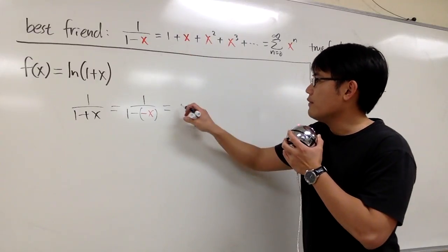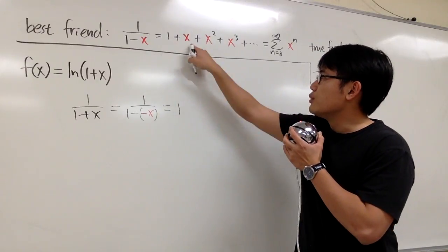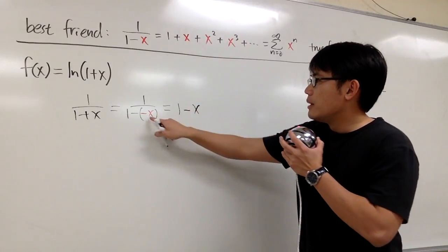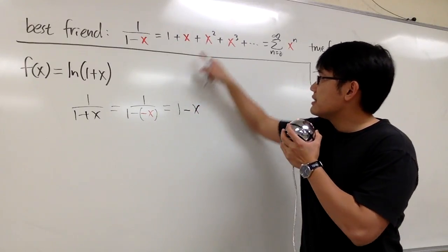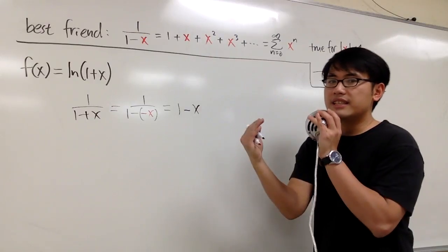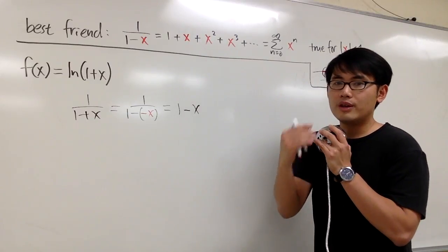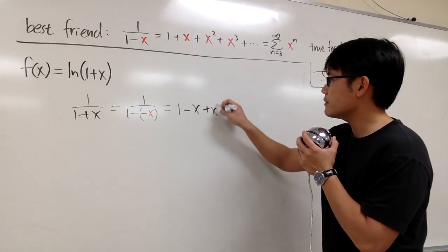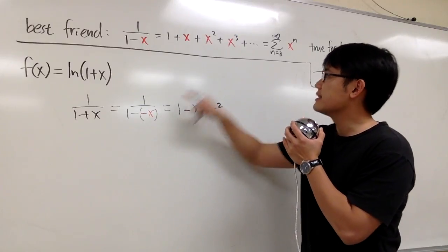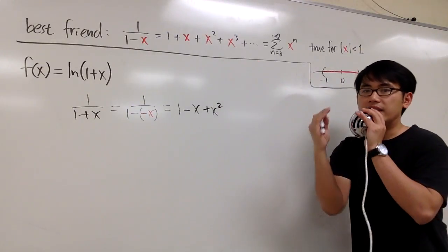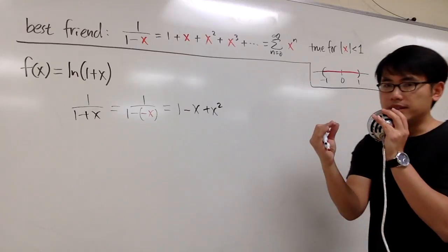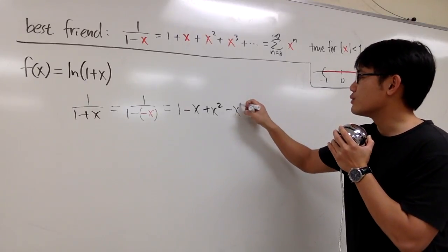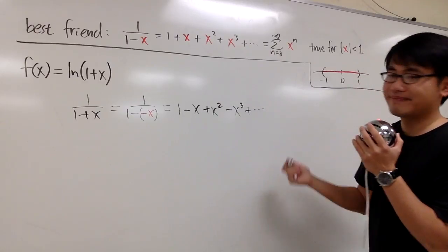We have 1 first, then plugging negative x gives plus negative x, so minus x. Plugging negative x into x squared gives positive x squared. Plugging negative x into x cubed gives minus x to the third power, and so on.